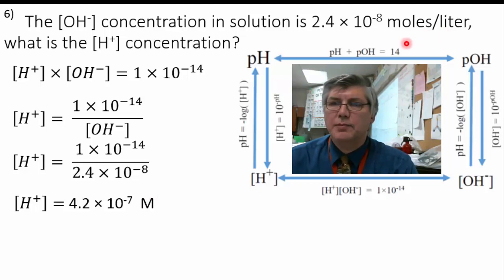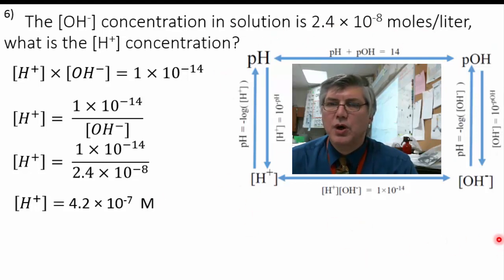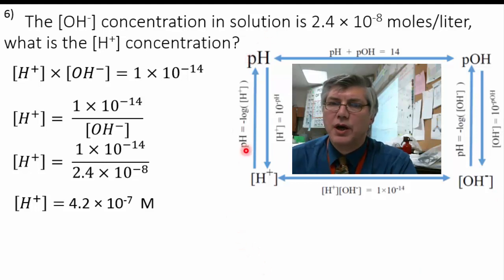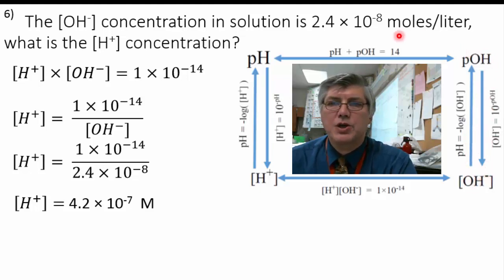Use this pH square when you do your worksheet so that you understand what you're doing. We've got examples of each one: pH going to H, H going up to pH, pOH going down to OH, OH going up to pOH, and going across in both directions.